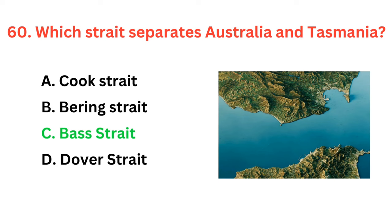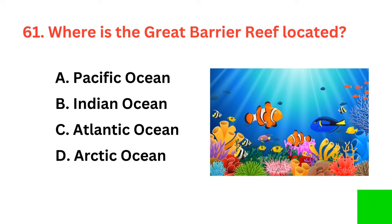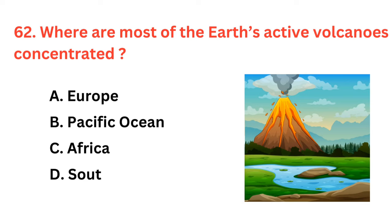Where is the Great Barrier Reef located? The correct answer is option A: Pacific Ocean. Where are most of the Earth's active volcanoes concentrated? The correct answer is option B: Pacific Ocean.